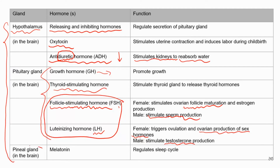The pineal gland secretes melatonin. If you've never used it before, next time you go to a pharmacy look for sleep aid supplements — check the active ingredient and it will say melatonin. In sheep brain dissections, the pineal gland is usually pretty easy to find.